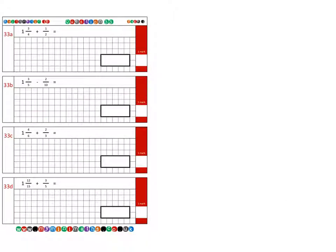And for the final question of today's tutorial, question 33d, we're going to be finding the sum of 1 and 12 fifteenths and 3 fifths. As we've already looked at different ways of doing this, another way is to convert this into an improper fraction.